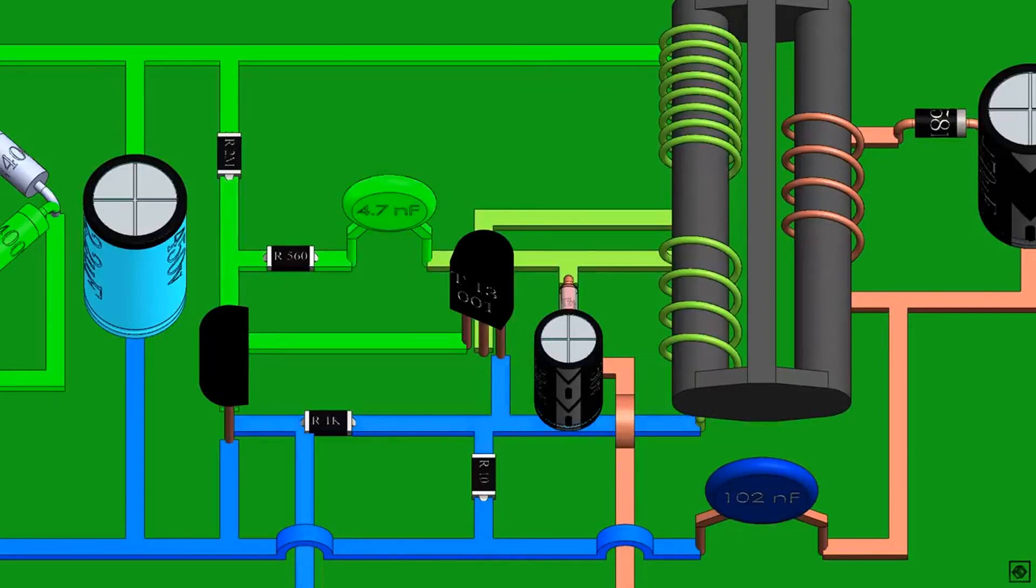As the transistor is now fully on, it allows current to flow through itself. This turns on transistor T2. This shunts the base of T1, turning it off. As T1 turns off, the flow of current to T2 is cut off.